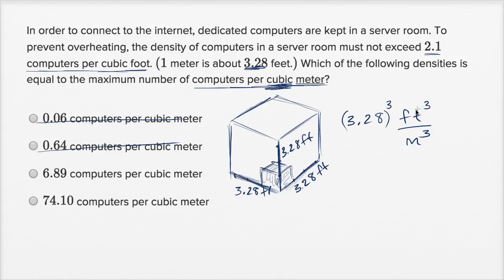Now, so this is the number of cubic feet per cubic meter. And if you want to know how many computers you can fit in that, you can then just multiply by the density in cubic feet. So times 2.1 computers per cubic feet.